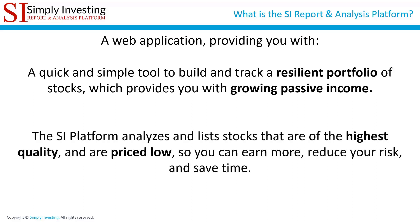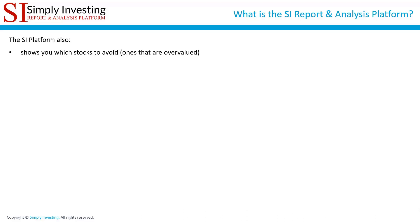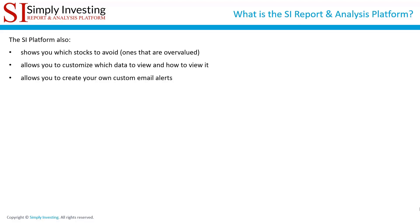The Simply Investing platform analyzes and lists stocks that are of the highest quality and are priced low — in other words undervalued — so that you can earn more, reduce your risk, and save time when it comes to investing. The platform also shows you which stocks to avoid, ones that are overvalued or priced high, allows you to customize which data to view, allows you to create your own custom email alerts, and allows you to get regular email notifications of top rank stocks.